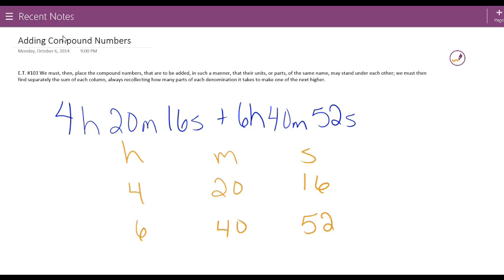Then I'm going to find separately the sum of each column, always remembering that to go from seconds to minutes that conversion is going to happen once we get to 60, and to go from minutes to hours again it's going to get to 60. Then if we were going to go to days, we'd have that conversion of 24.